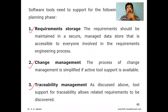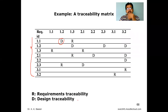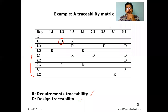Looking at the traceability matrix figure, requirements are identified as 1.1, 1.2, 1.3, and so on. In the matrix, 'D' indicates design traceability and 'OR' indicates requirement traceability. We can map whether any requirement traceability or design traceability exists between requirements, and how much design has been completed. This traceability matrix clearly shows how traceability is maintained between requirements, from design to design, design to requirement, and requirement to design.